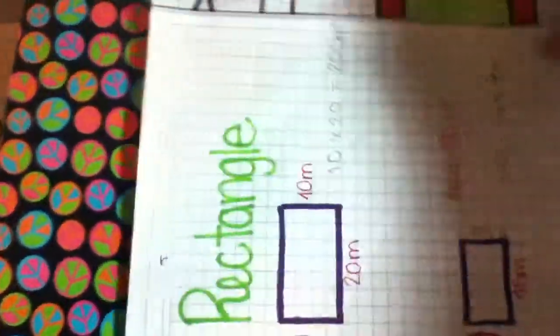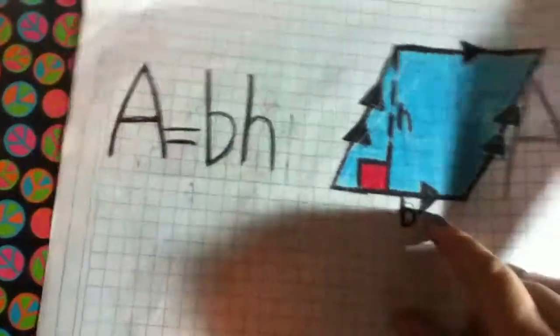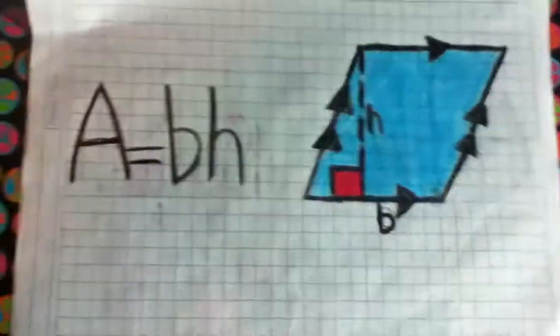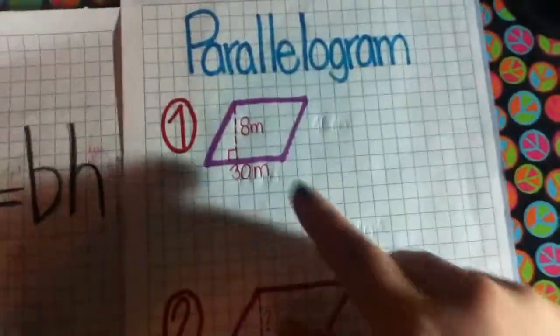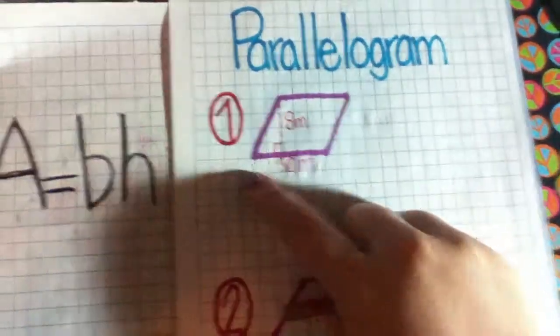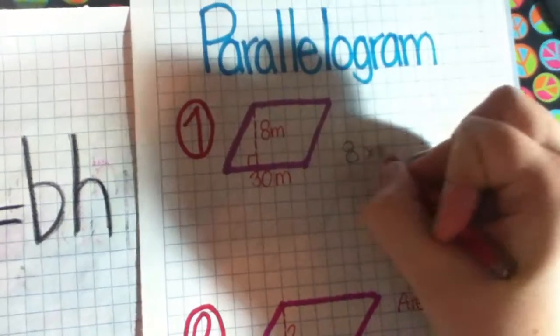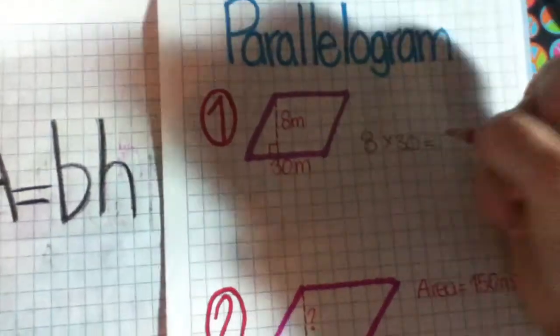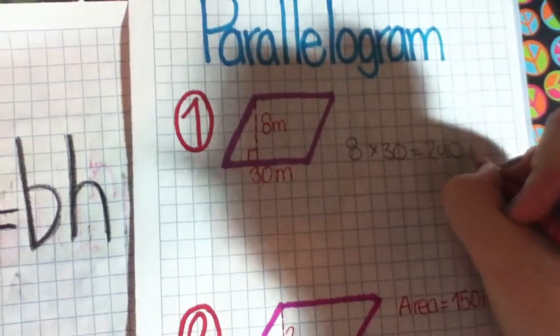Now we're going to continue with a parallelogram. The parallelogram has the same formula. Base times height. Let's do some exercises. This is the same way to multiply the height times the base. And this is 240 square meters.